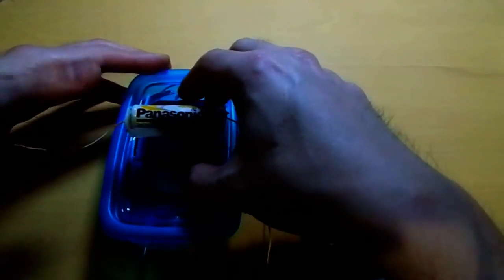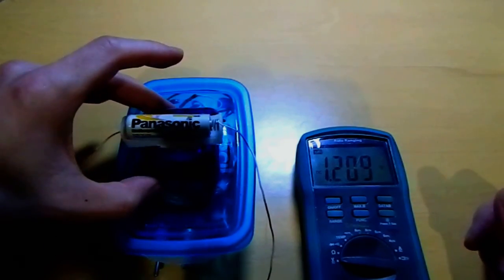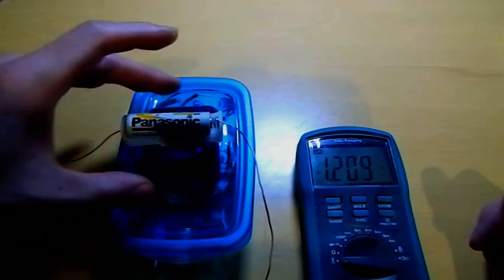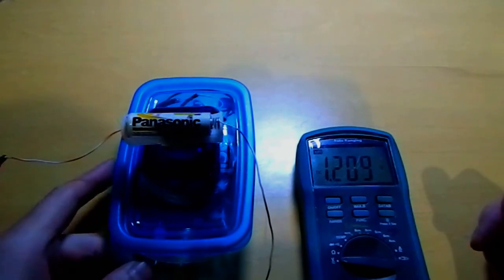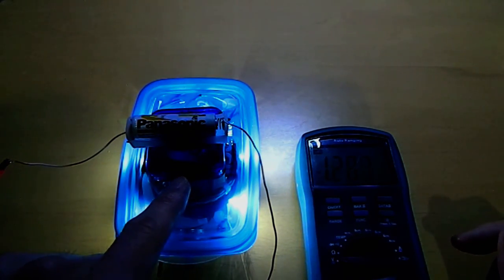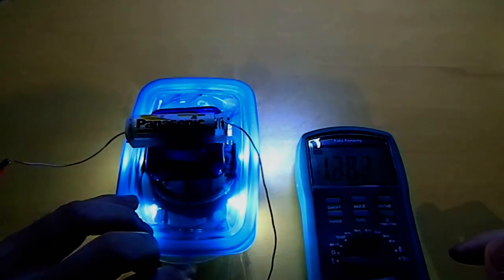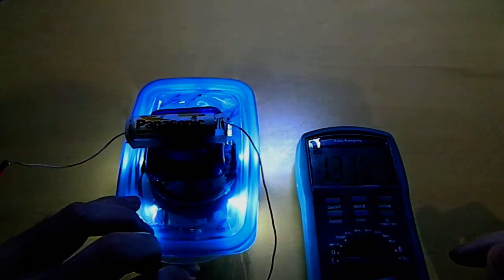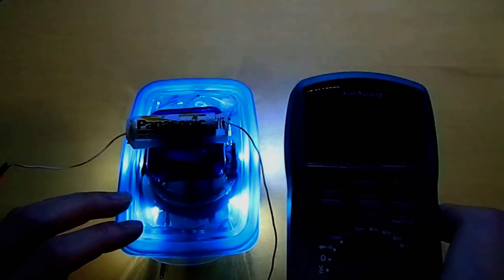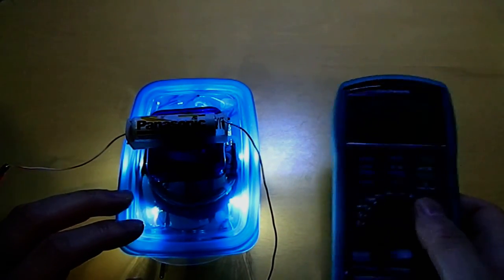We just put the charging coil on top of the wireless transmitter and turn it on. The little LED inside lights up and increases the light here. As you can see, now I'm at 1.3 volts.